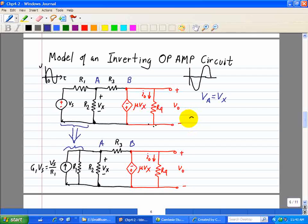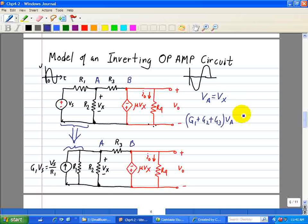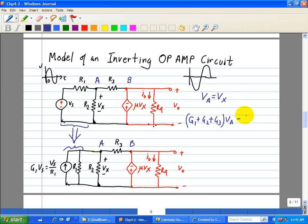So we write here G1 plus G2 plus G3 multiplied by the node voltage Va, and we see that R1 and R2 is connected to the ground reference, and that the other opposite end of the resistor R3 is node B, so that's minus G3 Vb. And then we have an incoming current source of G1 Vs.